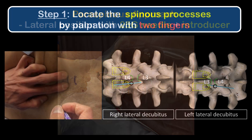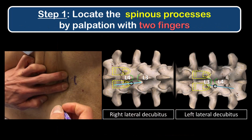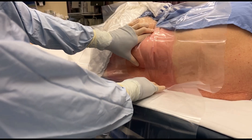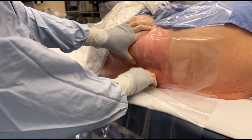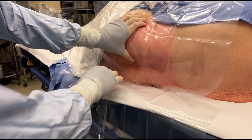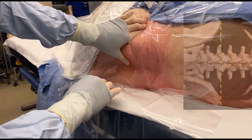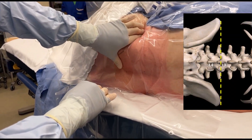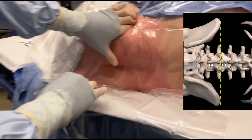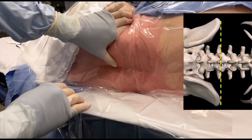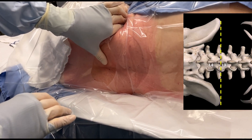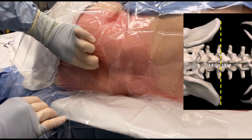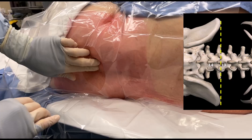Step 1: Identify the location of the spinous processes bordering a chosen interlaminar space. Begin by identifying the intercristal line to locate the L3 spinous process. Place your left index finger on the superior margin of the iliac crest and then drop your thumb towards the midline.